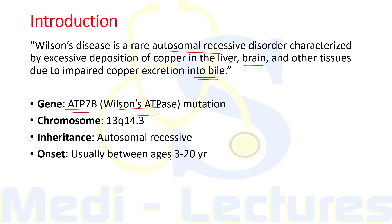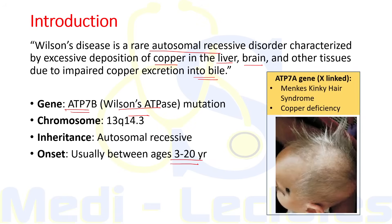The ATP7B gene is present on chromosome 13q. Inheritance is autosomal recessive and onset usually occurs between 3 to 20 years of age. Do not confuse this with the ATP7A gene, which is X-linked - mutation of that gene leads to Menkes' kinky hair syndrome due to copper deficiency rather than excess, characterized by brittle hair in children.